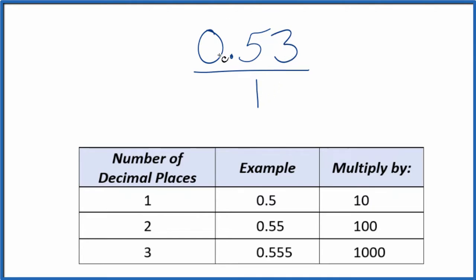What we need to do is get this to be a whole number up here. And we have two decimal places. We're going to multiply that by 100. So 100 times 0.53, that equals 53. And now we have our whole number.